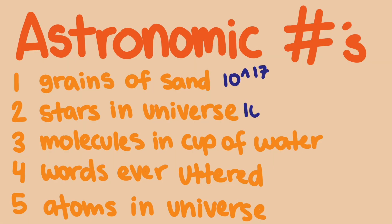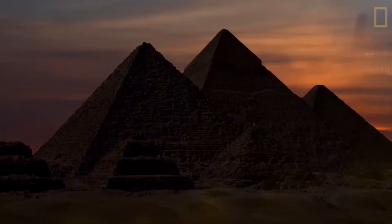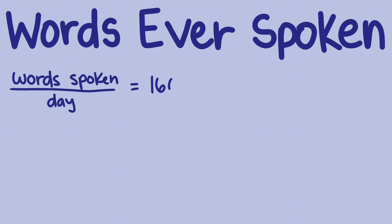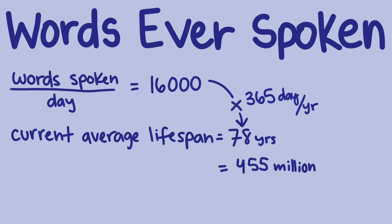That leads us to our next value: the number of words uttered in the history of mankind. That's also an astronomical number. We have billions of people speaking thousands of words each day, and humans have been around for millennia. How could we calculate the number of words ever uttered? This one's not too complicated if we know a few benchmark numbers. First, how many words does an average person speak each day? Others have estimated this at 16,000 words. That means in my lifetime, if I live to be 78 — the current average lifespan — I would say over 455 million words.